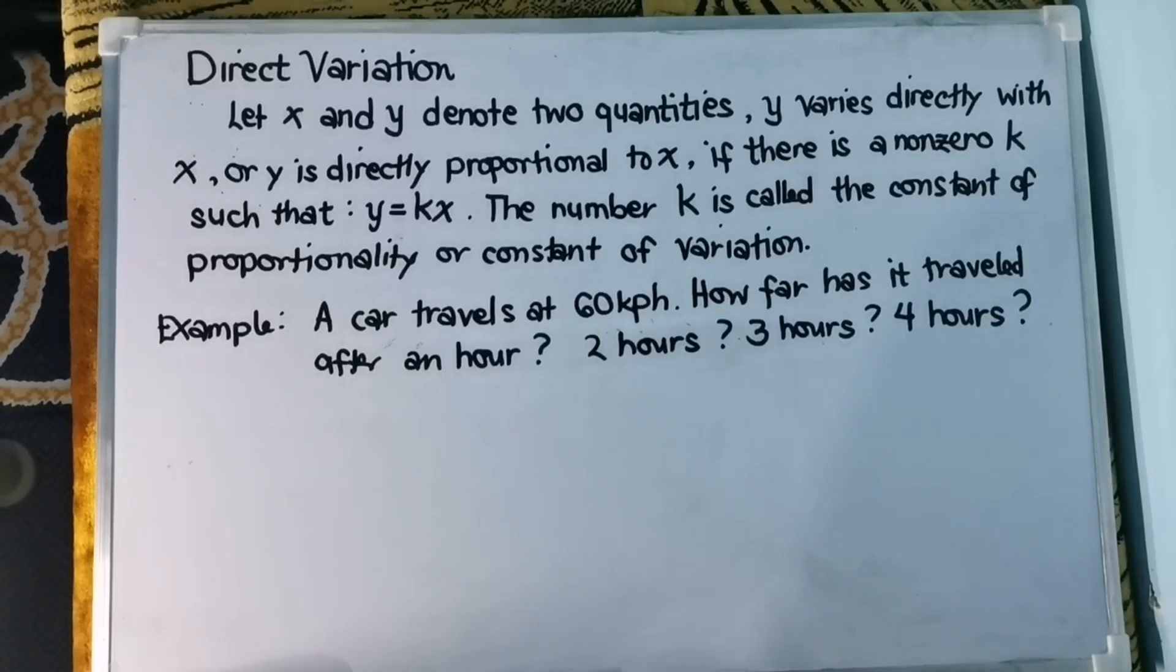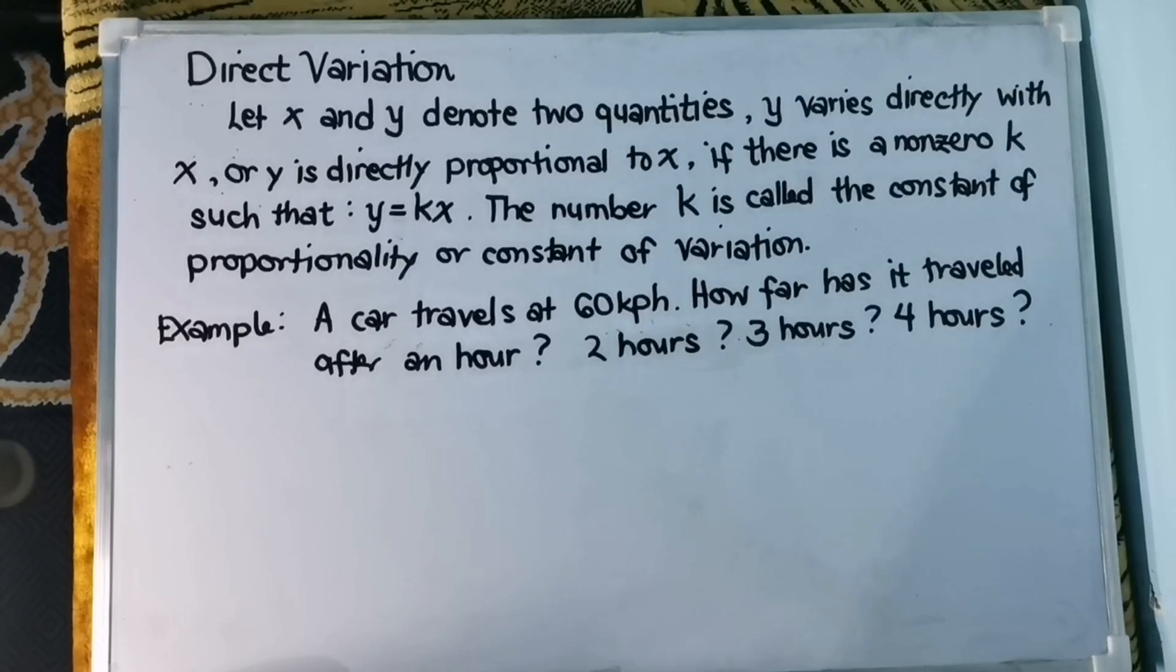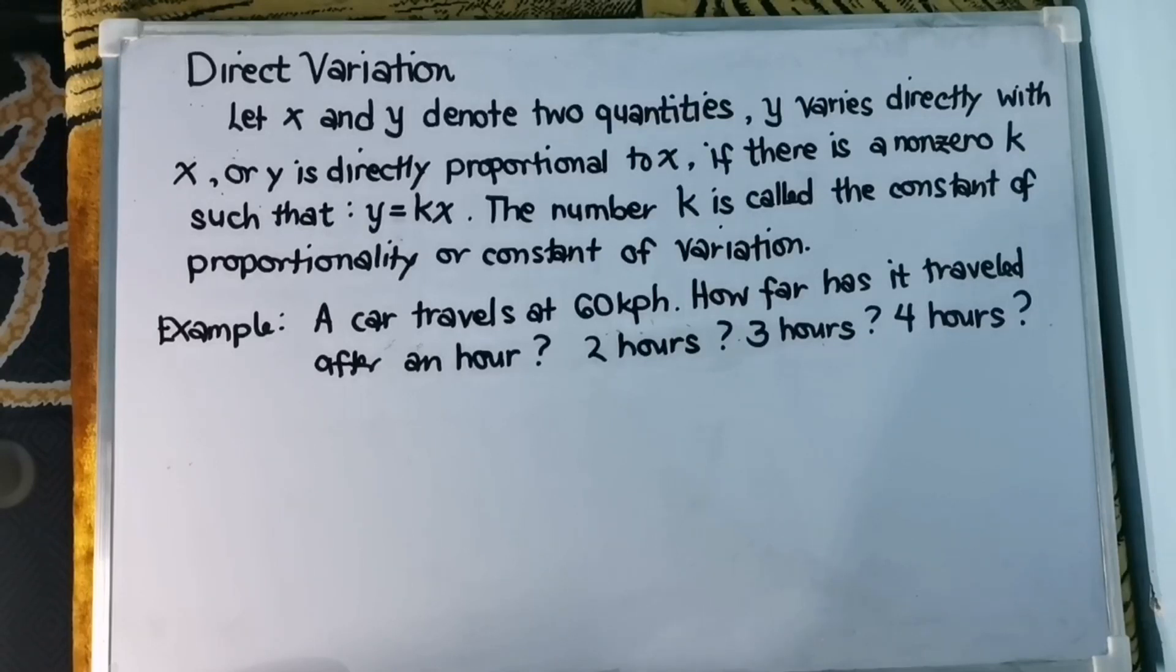Let's talk about related quantities. There are situations in life that we can say that they are related to one another and they are not related to one another. For example, the nature of activity and heart beat. If you are running so fast, then your heart beats fast.